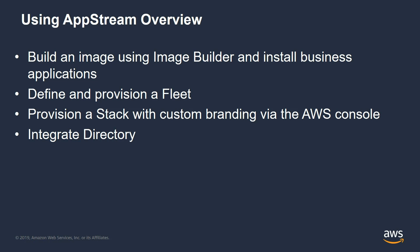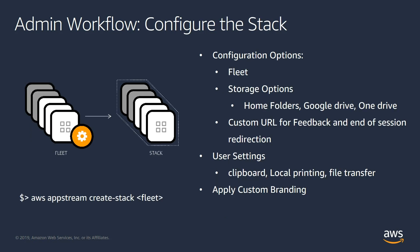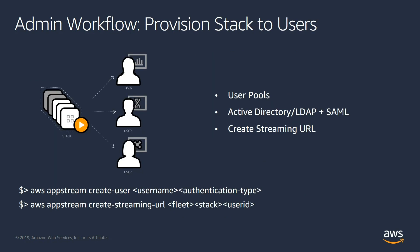The fourth step is to integrate the user directory. AppStream comes with its own user directory called the user pool, but as shown in the demo, you can also integrate with Active Directory or any SAML directory. So at a high level: build your image, define and provision your fleet using that image, configure the stack with application options, and provision the stack to users with directory integration.